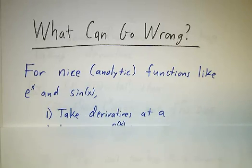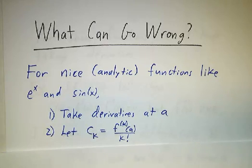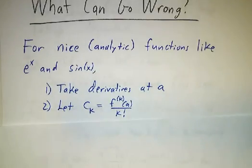We take a whole bunch of derivatives at a point a. The most convenient point is a equals zero, but we can do it around some other point as well. We define some coefficients. The kth coefficient is just the kth derivative at a divided by k factorial.